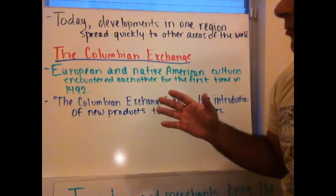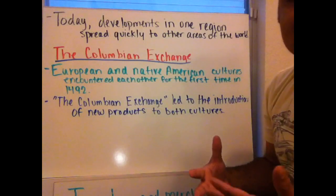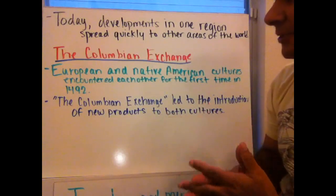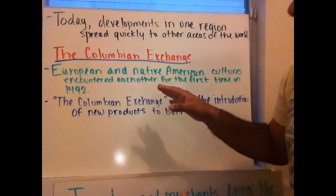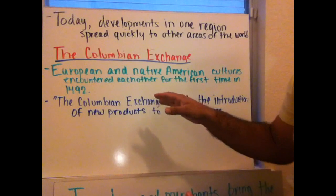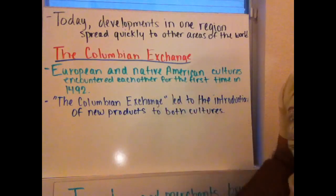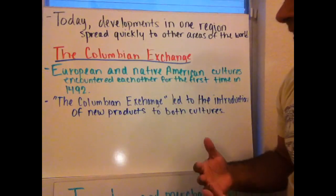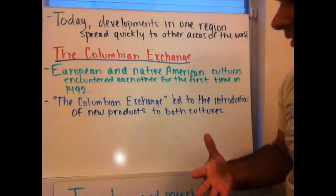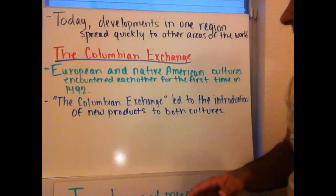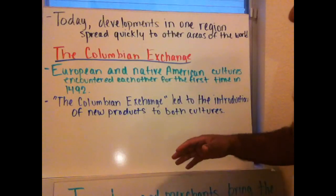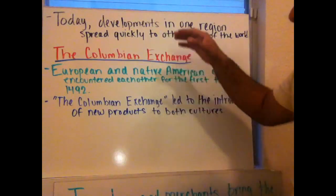We're going to take a look at an example of the Columbian Exchange. European and Native American cultures encountered each other for the first time in 1492. It was called the Columbian Exchange, and this led to the introduction of new products to both cultures.